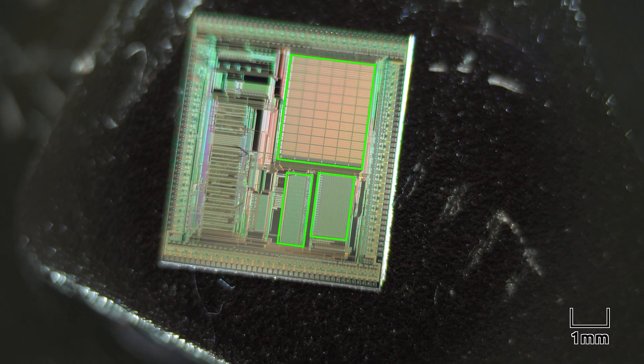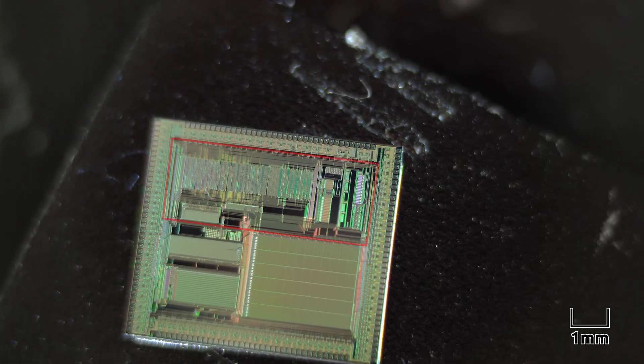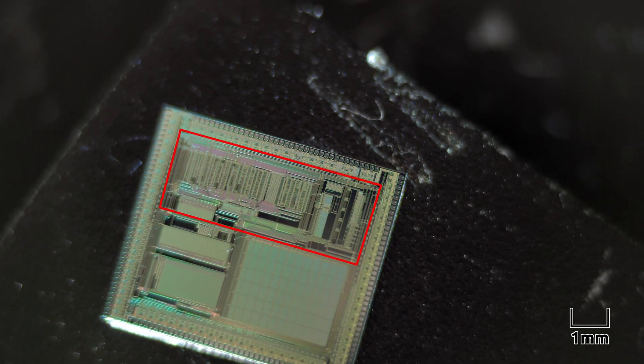These areas are most likely for data storage, like RAM and ROM. And this area is likely where most of the computation happens.